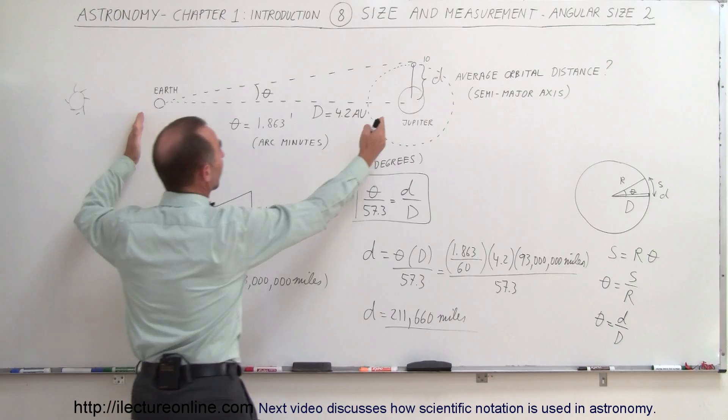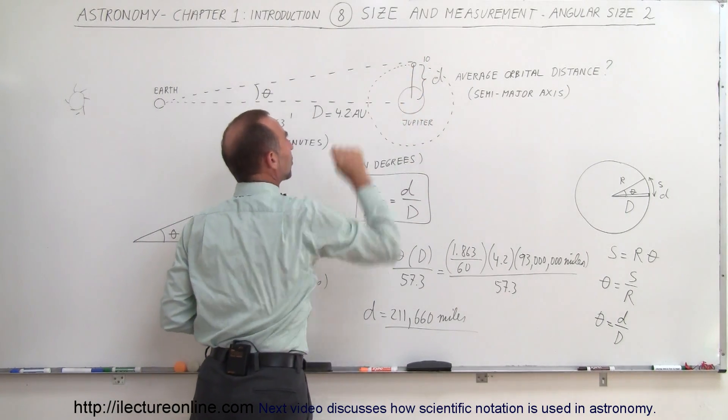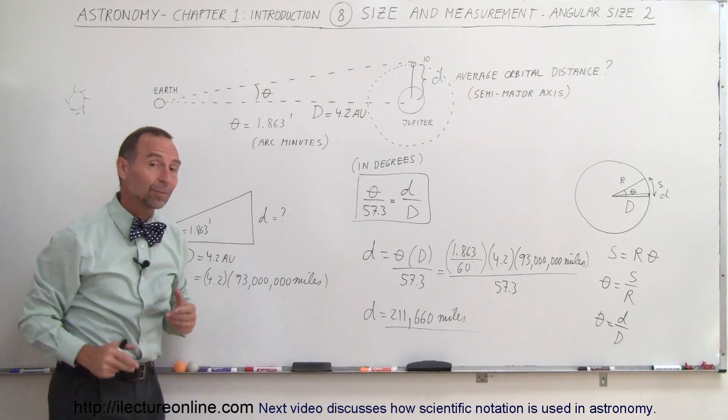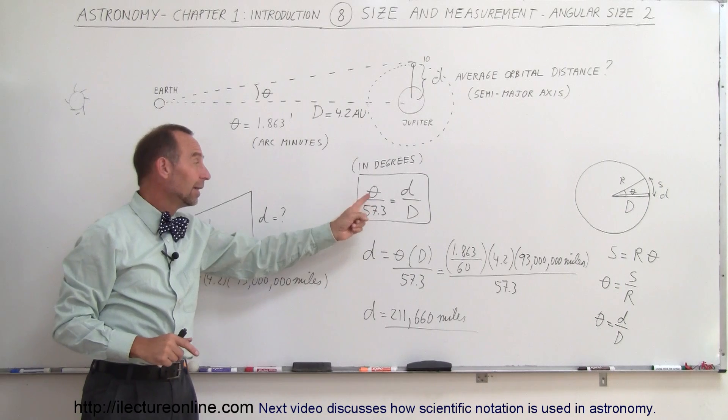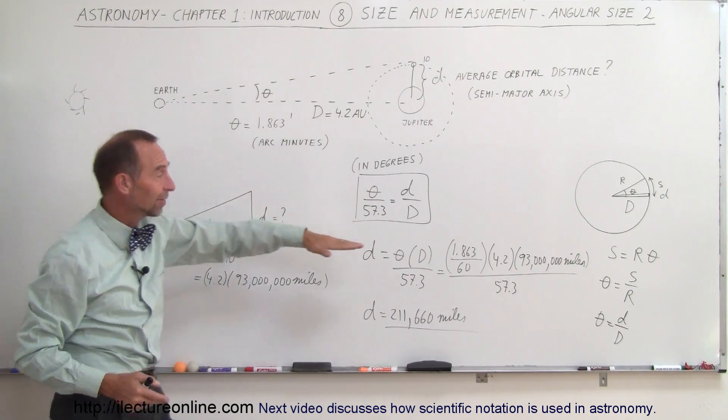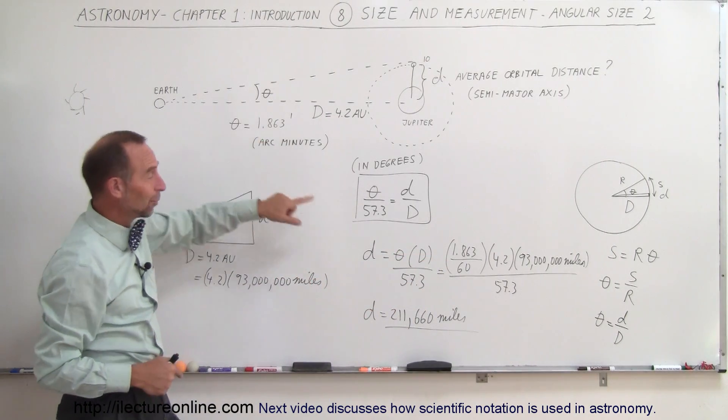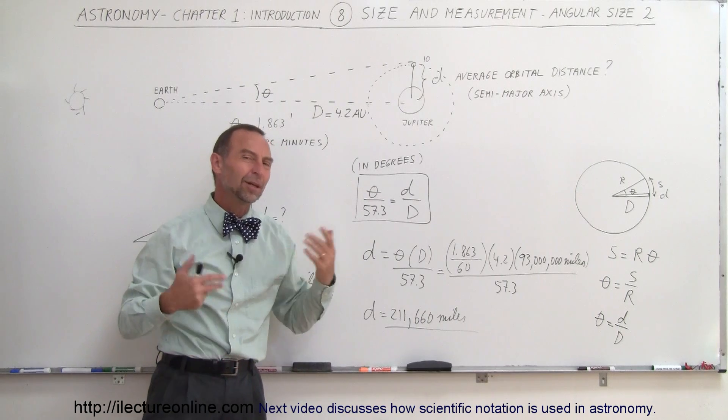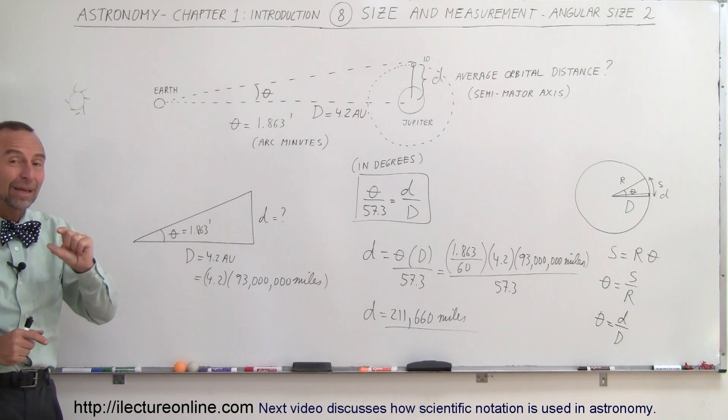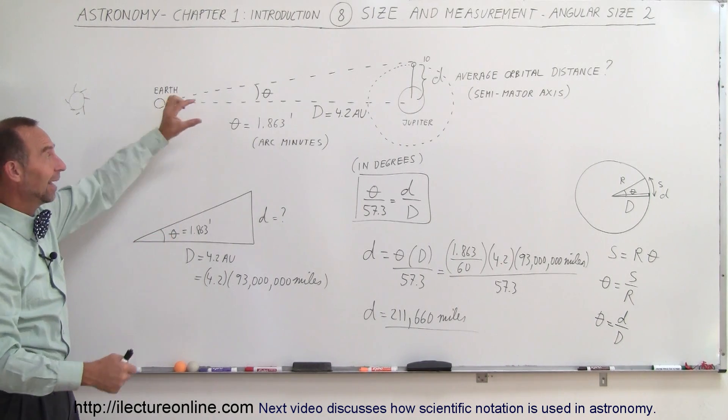So big D is the distance to the object we're looking at. Little d is the distance that we're trying to figure out. We measure the angle and plug into that equation. Remember, this is in degrees. So if we take the measurement and it's in arc minutes, then we have to divide by 60. If the measurement is in arc seconds, then we'll have to divide by 3600 because there's 3600 arc seconds in one degree. And that's how we find out how big things actually are. So all we need to know is the distance and the angle.